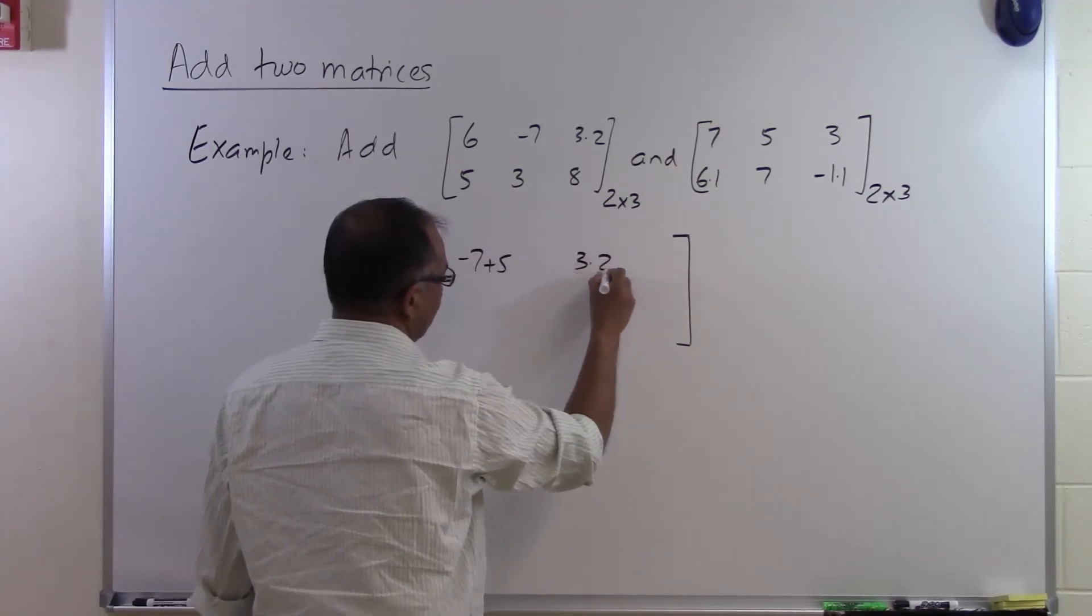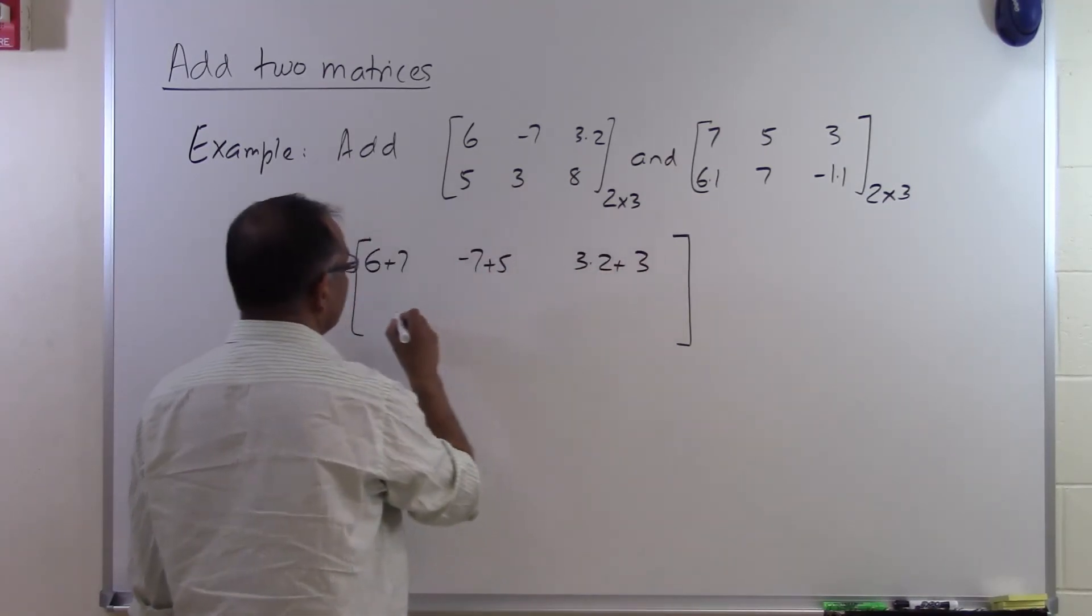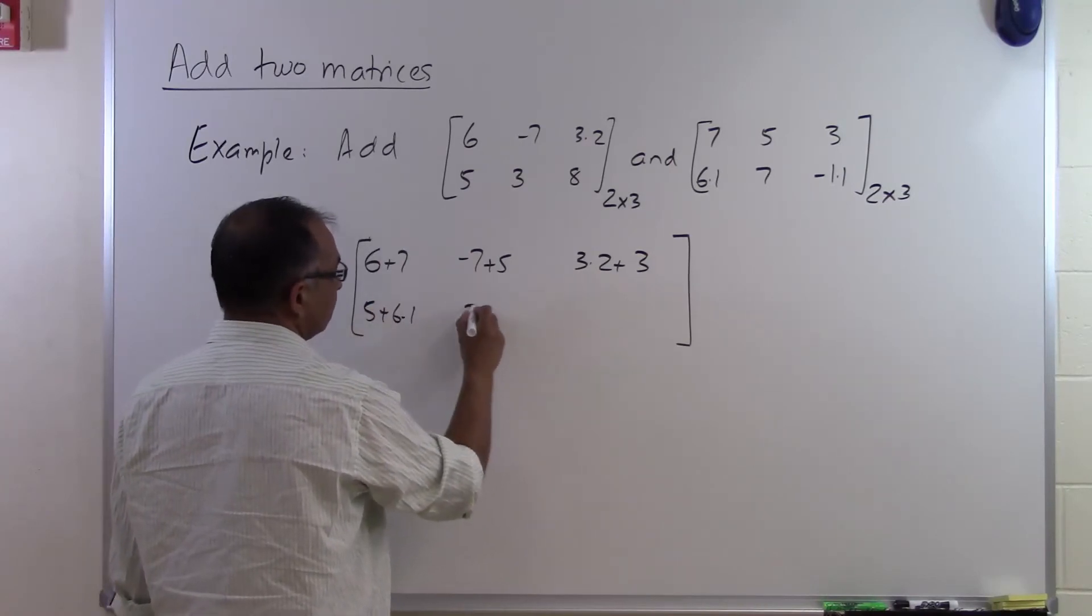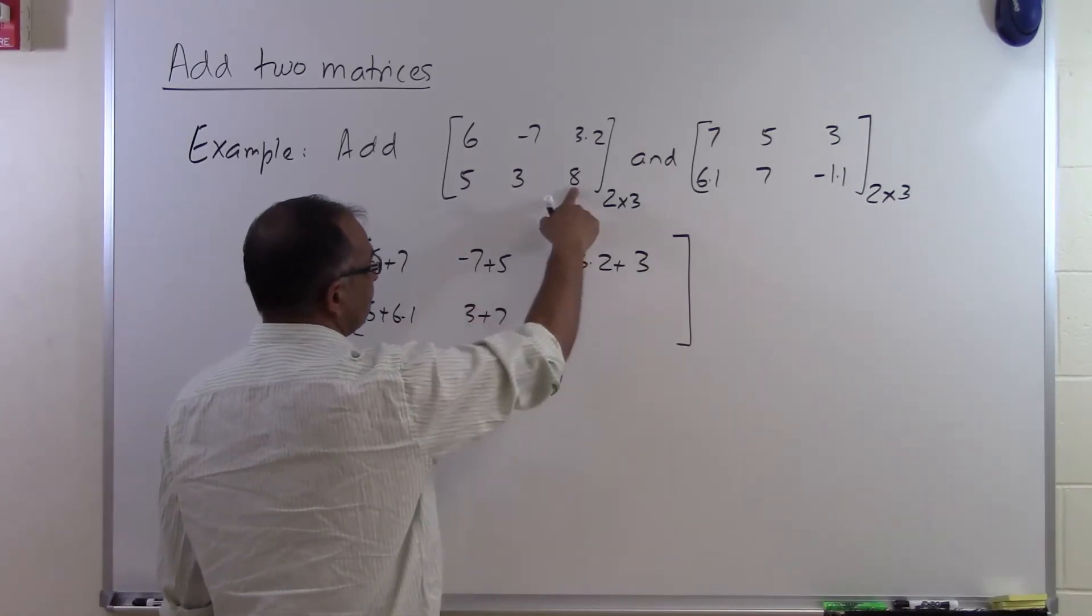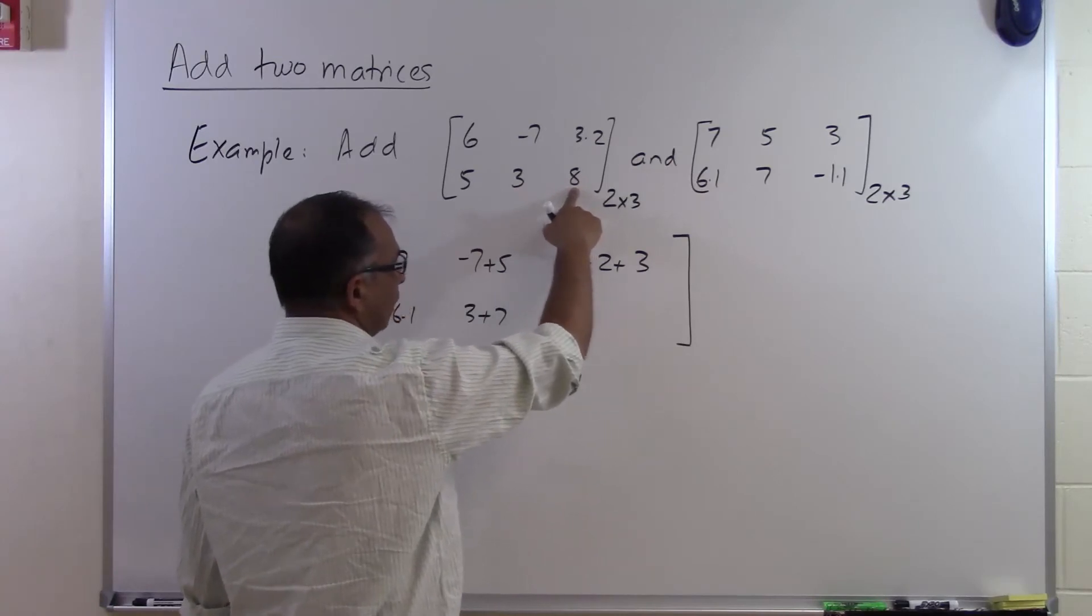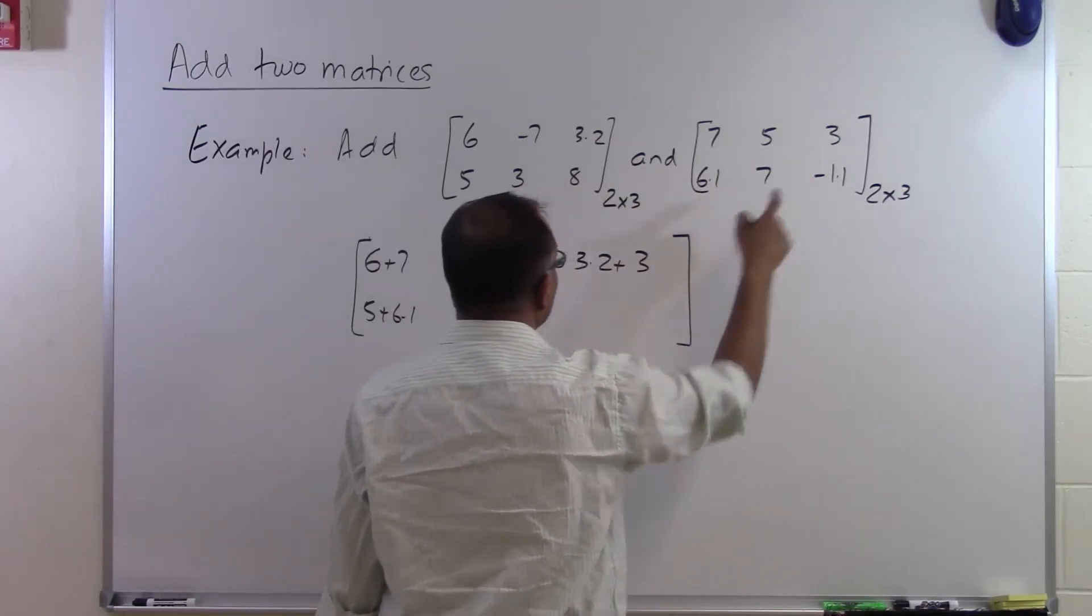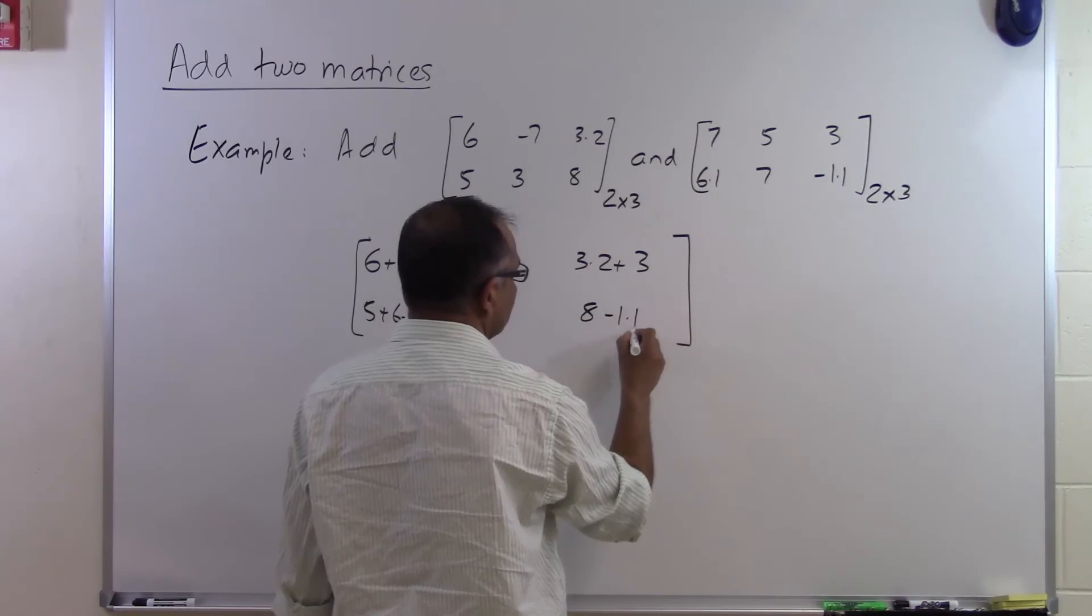The same way, the other elements: 5 plus 6.1, 3 plus 7. The second row, third column will be added to the second row, third column here: 8 minus 1.1.